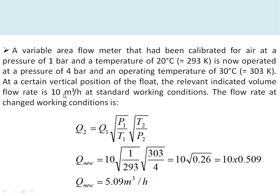At a certain float position the indicated volumetric flow rate is 10 m³/h at the standard working condition of 1 bar and 20°C. We need to calculate the actual flow rate at 4 bar and 30°C. Using the equation Q_2 = Q_1 × √(P_1/T_1) × √(T_2/P_2), the correction factor comes out to 0.509, so the actual flow rate is 5.09 m³/h — even though the float reads 10 m³/h.